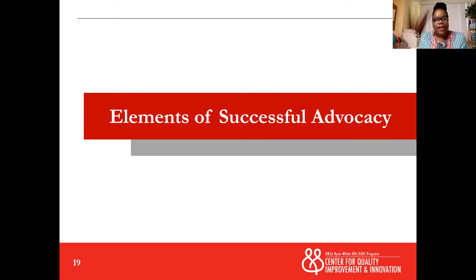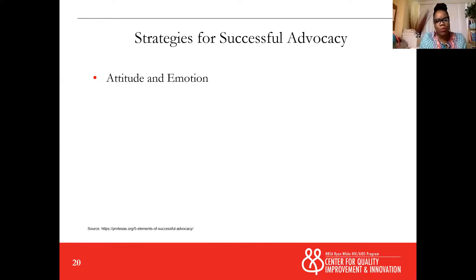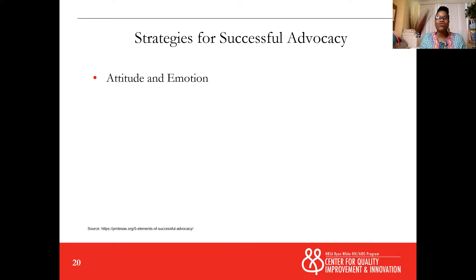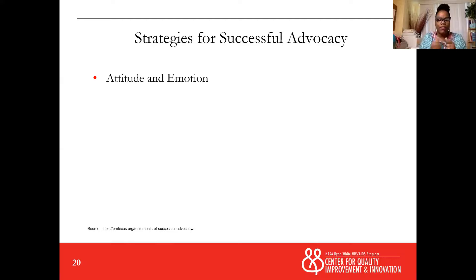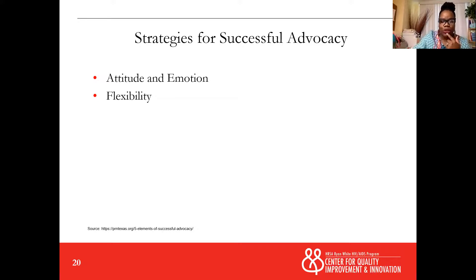Let's look at strategies for successful advocacy. The first one is attitudes and emotions — even when I'm emotional or passionate about something, I have to make sure that my tone is correct. That means not yelling, dropping my voice when I feel anger, and making sure that what I'm saying is getting across and folks are not getting caught up in the emotion of it all. When I think about flexibility — the next bullet — it's really just about keeping an open mind. What I understand is that locking down really invites resistance.